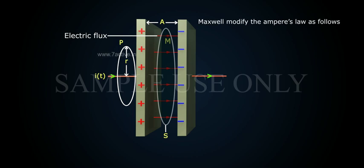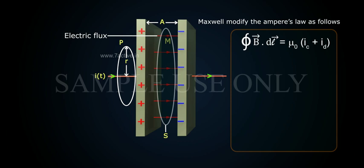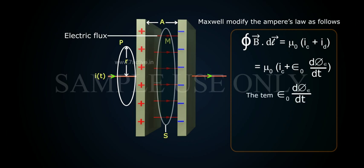Maxwell modified the Ampere's law as follows. Surface integral of B⃗·dl⃗ equals μ₀ times (Iₒ + Iₐ) equals μ₀ times (Iₒ + ε₀ times derivative of φₑ by dt).